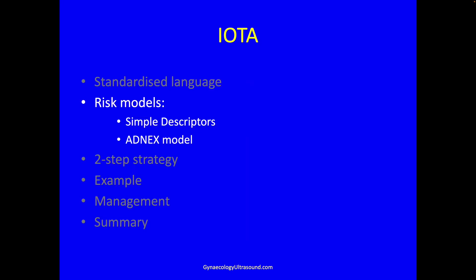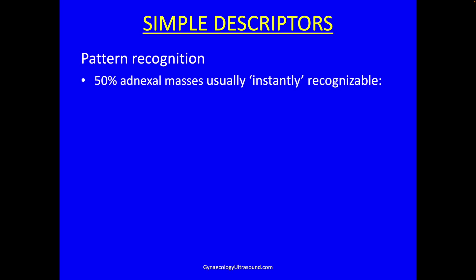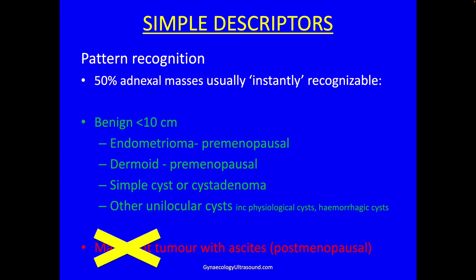So we've used the standardized language from IOTA and now we can use their risk models: simple descriptors and ADNEX — that is a two-step strategy. Simple descriptors is basically pattern recognition, because half of all adnexal masses are usually instantly recognizable. They have to be less than 10 centimeters in size because that's the resolution of the transvaginal probe. There is a simple descriptor which is malignant, but we're only going to use the benign simple descriptors.